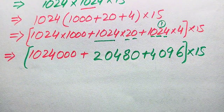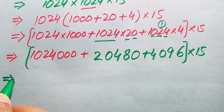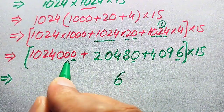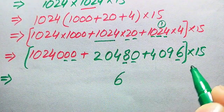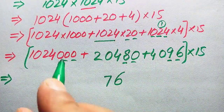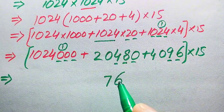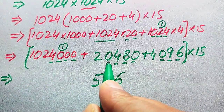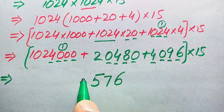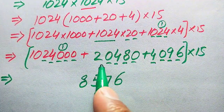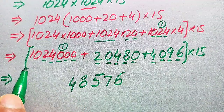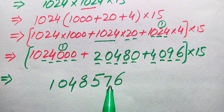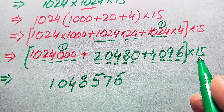Using traditional addition to sum all the partial products, we add column by column: 0 plus 0 plus 6 is 6; then 8; then 8 plus 9 gives 17, write 7 carry 1; continuing through each column, the final result of 1024 times 1024 is 1,048,576.